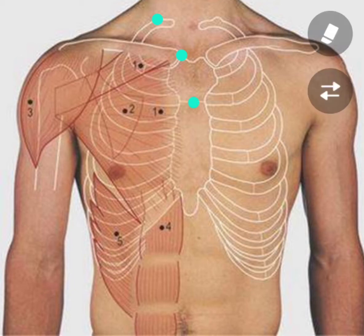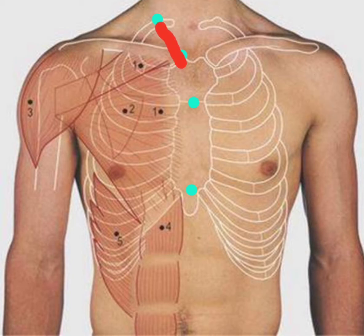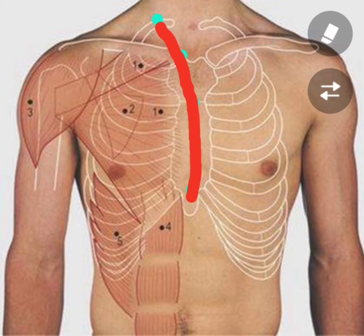The third point is at the middle of the sternal angle, and the fourth point is at the xiphisternal joint. Now I am joining these points. So this is the anterior border of the right lung.